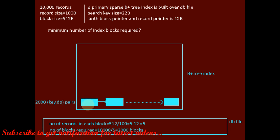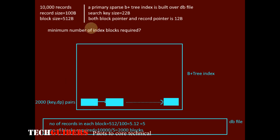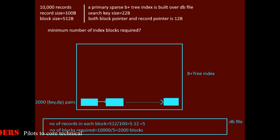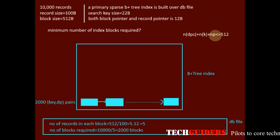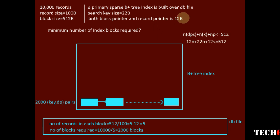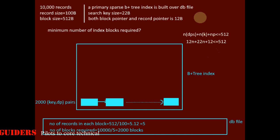To find the number of key-data pointers that can be kept in each leaf node, we consider the structure of the leaf node. Since every node is maximum occupied, we find the maximum number of key-data pointer pairs that can be kept. According to the leaf node structure, if there are n data pointers, there will be n keys and one block pointer or node pointer. Together they should occupy a block of 512 bytes. So: n data pointers × 12 bytes each, plus n keys × 22 bytes each, plus one node pointer × 12 bytes ≤ 512.